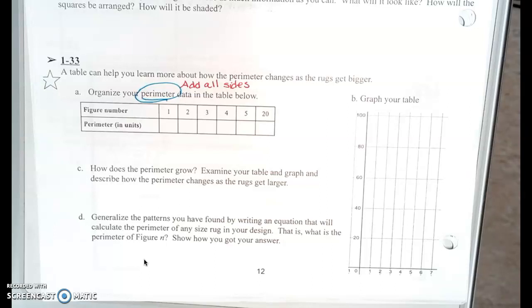Part D says, generalize the patterns you have found by writing an equation. See if someone in your group can come up with the equation that will calculate the perimeter of any size rug in your design. So what if I said, how many are in figure 99? You should give me an equation that you would just be able to plug that number into.